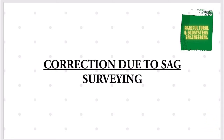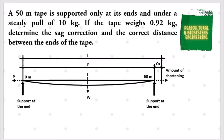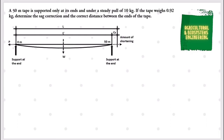We will be solving this problem: A 50-meter tape is supported only at its ends and under a steady pull of 10 kilograms. If the tape weighs 0.92 kilograms, determine the sag correction and the correct distance between the ends of the tape. The figure below illustrates our problem.